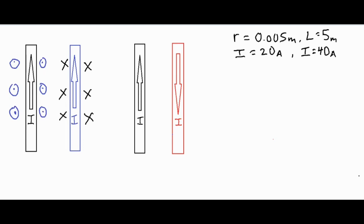Now take a look at each one of these individually. For the black wire, using the right-hand rule with fingertips pointing out of the screen and thumb going upwards, the palm faces to the right, so it feels a force to the right. For the blue wire, thumb going upwards and fingertips going into the screen, the palm faces to the left. So they're both being pulled in towards each other — they are going to attract.